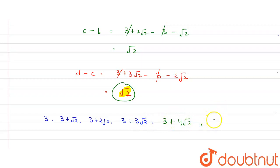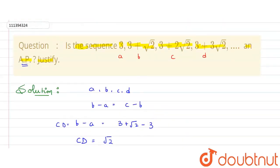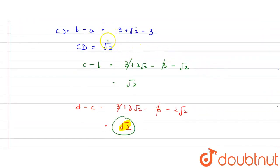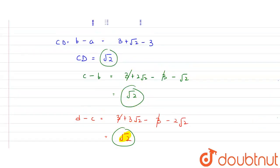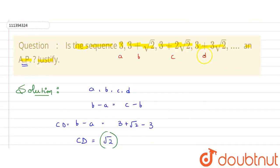Then again add root 2. So, this will be 3 plus 5 root 2 and so on. So, what we can conclude from here? Common difference was always root 2. You can see root 2 here also, here also and here also. So, common difference is always the same. So, it is an AP. So, we have proved that this is AP.